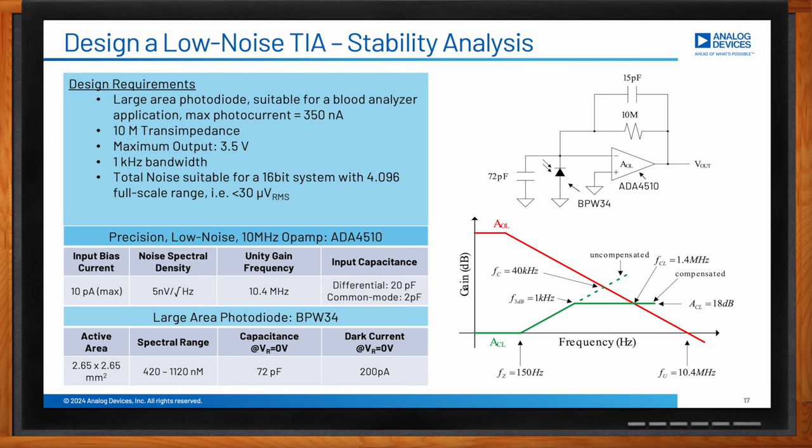From the stability graphs with the selected components: without the compensating capacitor, the closed-loop gain intersects the open-loop gain at 40 dB/decade — an unstable circuit. A 15 pF feedback capacitor is needed to stabilize the circuit. Setting the RF·CF combination for a 1 kHz cutoff frequency simultaneously solves the stability issue and reduces noise in one step.